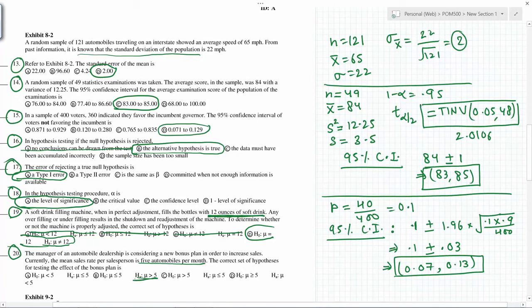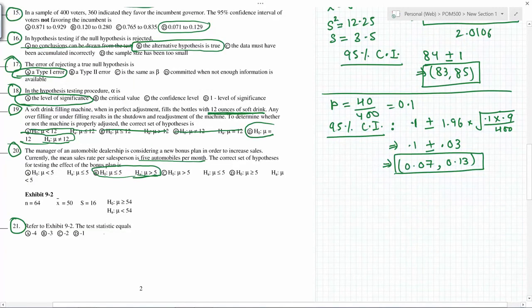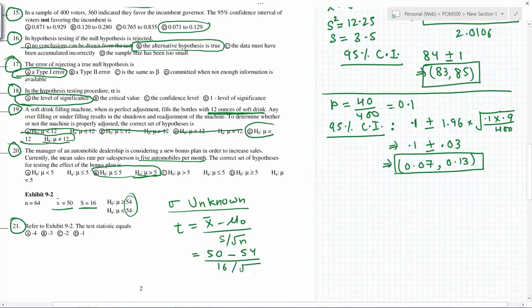Test statistic - this is a sigma unknown case. For sigma unknown, the test statistic is given by t equals X bar minus mu 0 over s divided by square root of n. X bar is 50, mu 0 is 54, s is 16, n is 64. So you simplify this, you get negative 2.